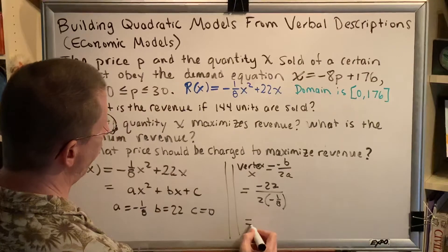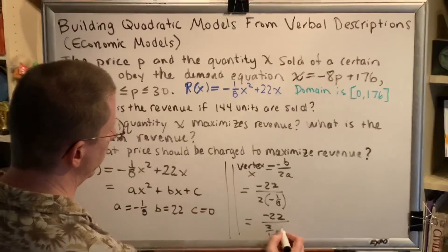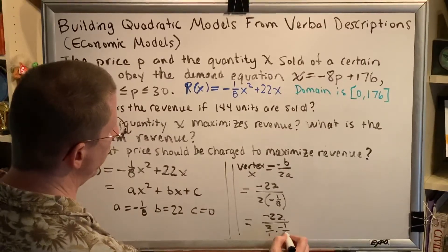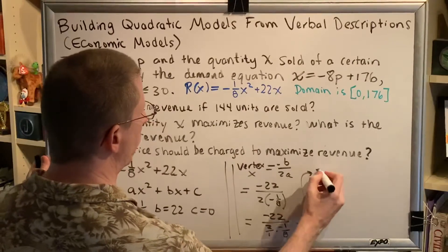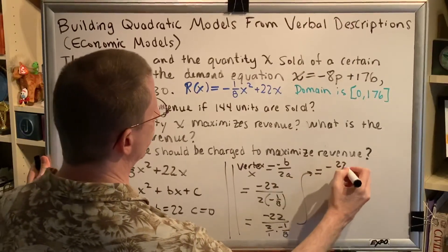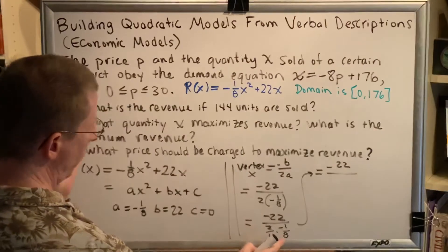Now, we've got to do a little bit of fractions math here. 2 is the same as 2 over 1, and then that 2 over 1 is being multiplied by the negative 1 over 8. So, we're going to get negative 22 divided by... Now, 2 and 8 have a common factor of 2,